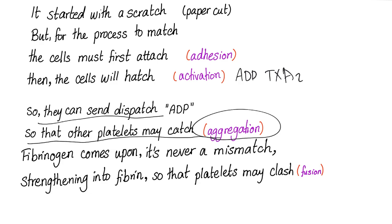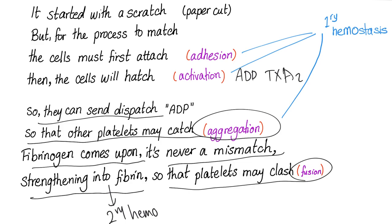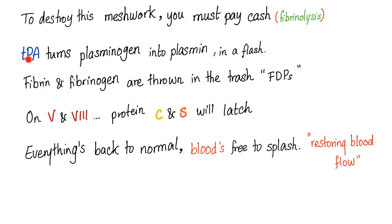Fibrinogen comes upon, it's never a mismatch. Strengthening into fibrin so that platelets may clash — strengthening into fibrin, this is the secondary hemostasis. To destroy this meshwork, you must pay cash. TPA turns plasminogen into plasmin in a flash.